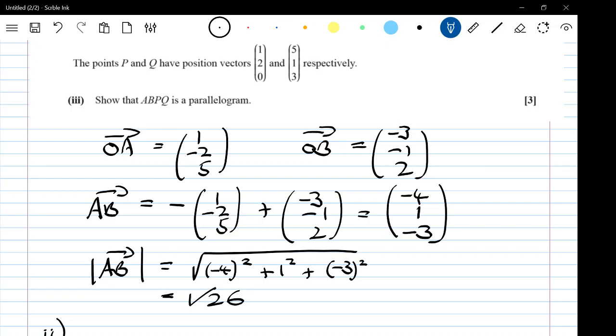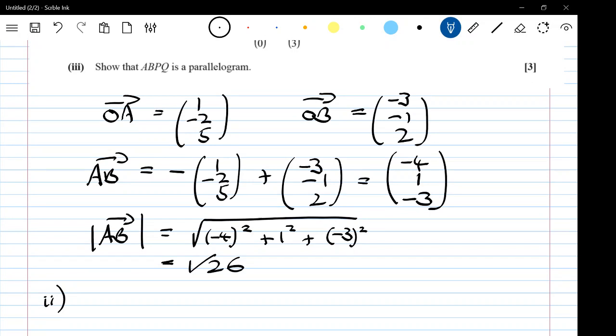Okay, so the next part said find the position vector of the midpoint of AB. So the midpoint, that would be, well one way we could do that is the vector to get to OM is like going to A and then doing half of AB.